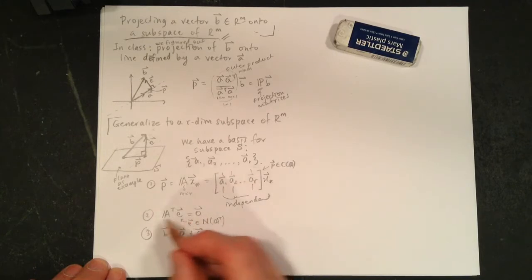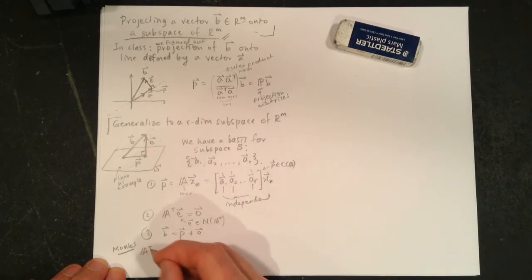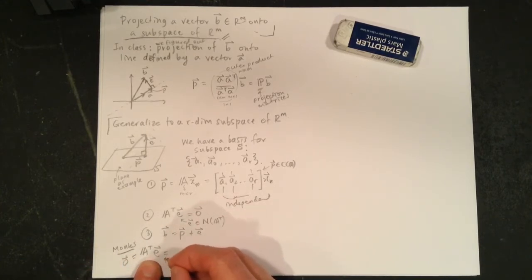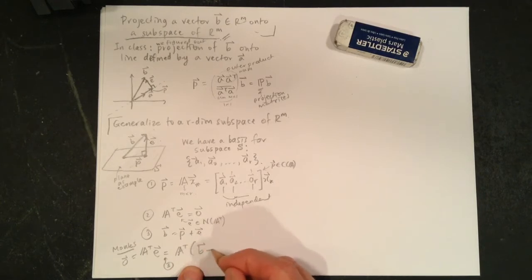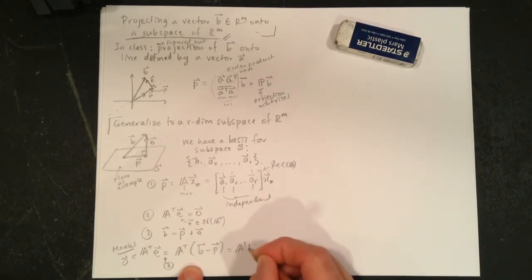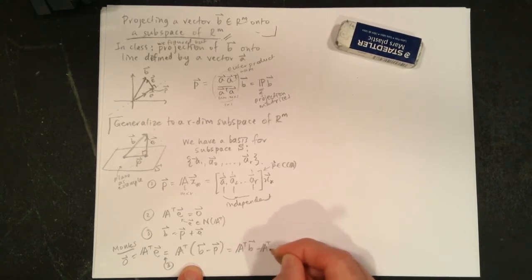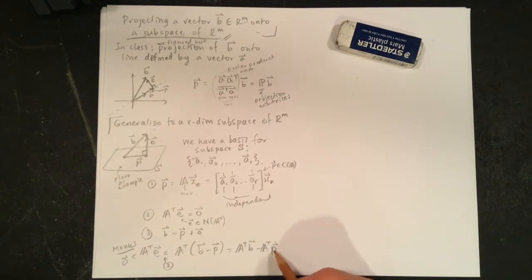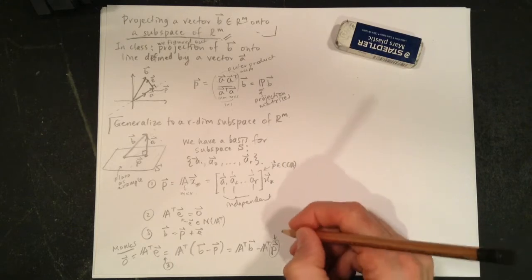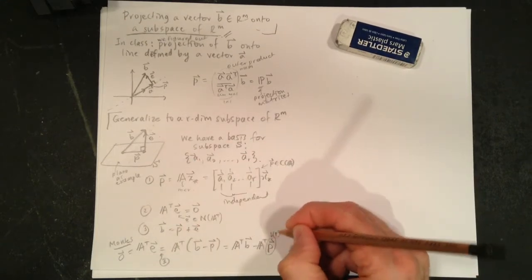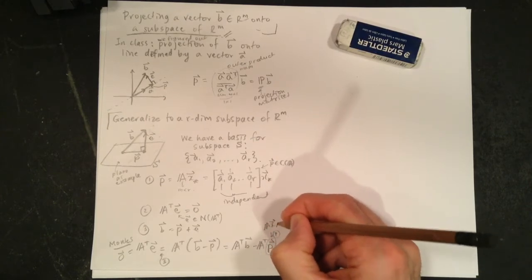So we'll use two. The monks help out here. They say, okay, try this one grasshopper. A transpose E equals zero. All right, this is zero. We're going to replace E by three. So it's A transpose, and E is B minus P. Excellent. A transpose B, spread that out. And this character here using one.